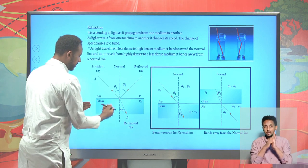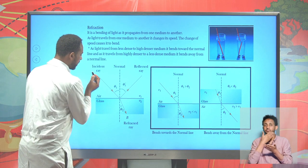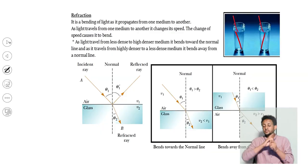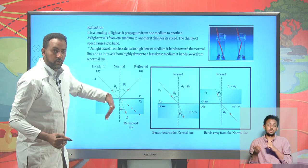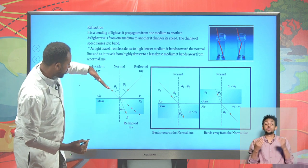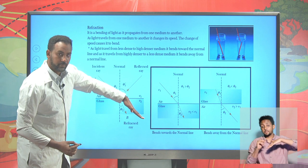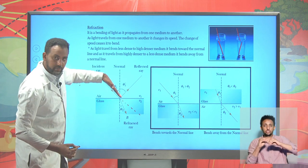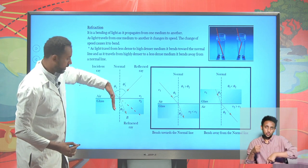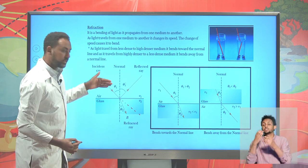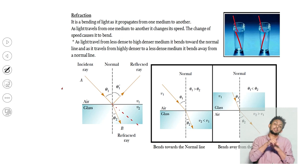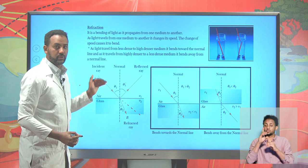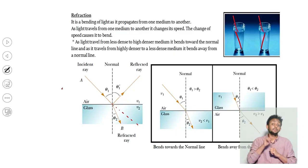Consider two mediums: air and glass. Glass is denser than air. As light propagates in air it moves in a straight line, but when it faces glass — a denser medium — it bends towards the normal line. If light moves from glass back into air (less dense), it bends away from the normal line. When moving from a less dense to a denser medium, light bends towards the normal; from denser to less dense, it bends away from the normal.